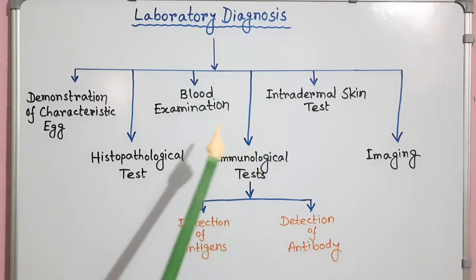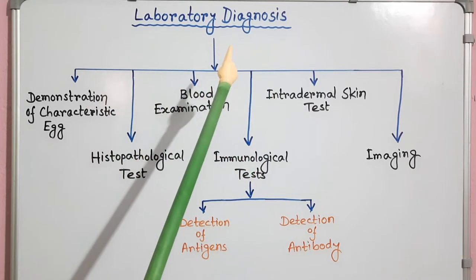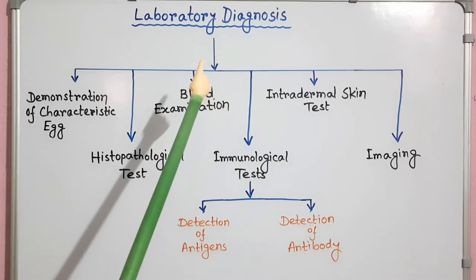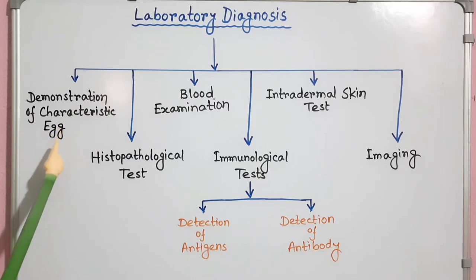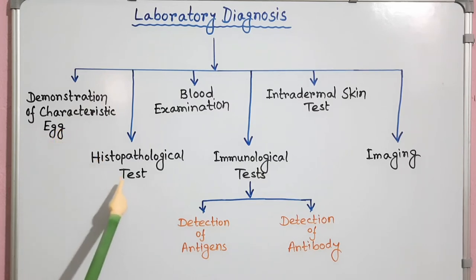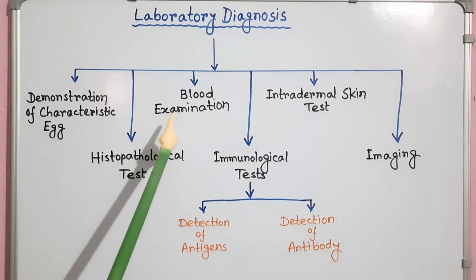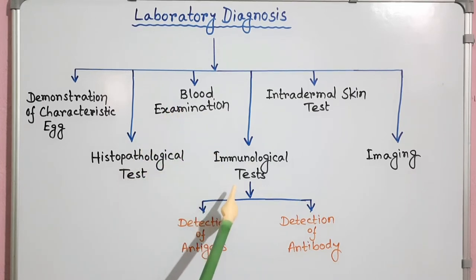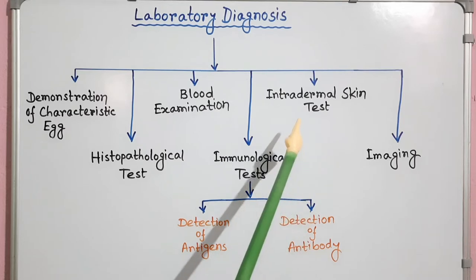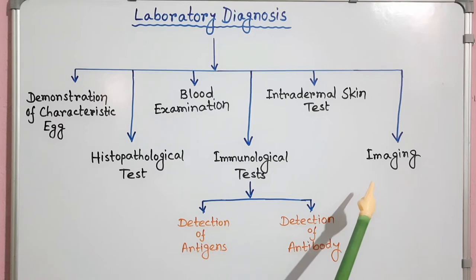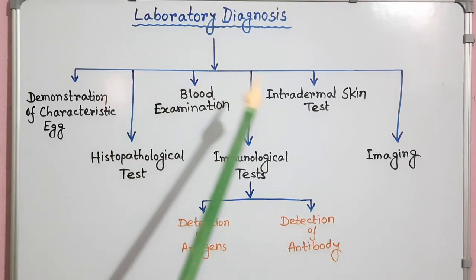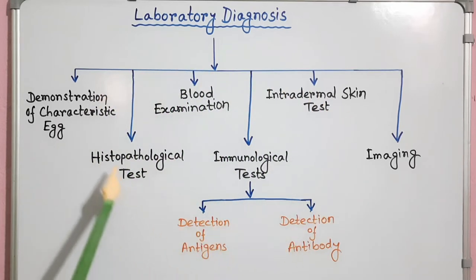Here I have mentioned different laboratory diagnosis methods of cystosomiasis. The methods are: demonstration of characteristic egg, histopathological test, blood examination, immunological tests which include detection of antigens and detection of antibody, intradermal skin test, imaging, etc. Now I will discuss all these methods in brief.